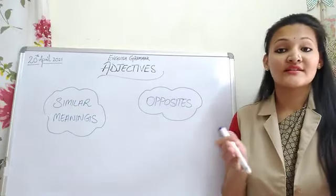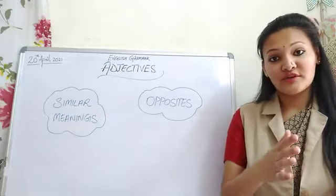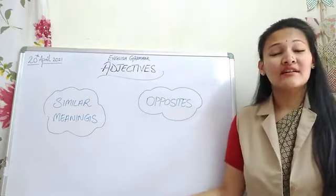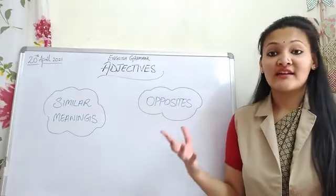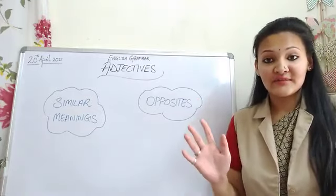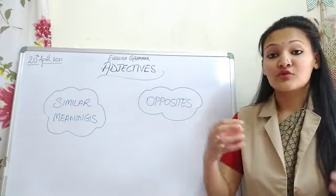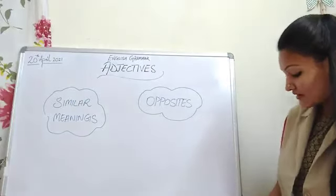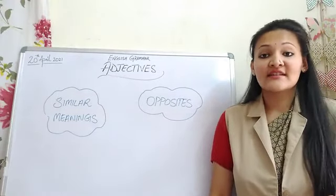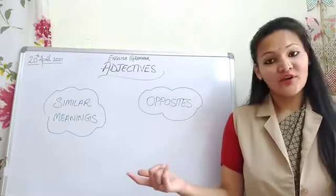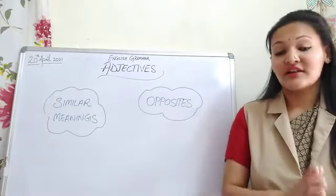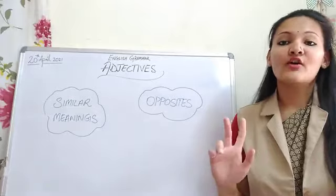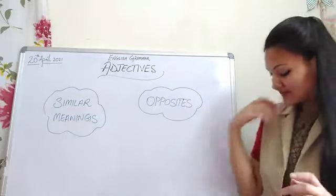Then there are opposites. If there are positive qualities, there are negative ones too. For example: high and low, dry and wet, clean and dirty, brave and coward, present and absent, long and short, light and heavy — all these are opposite adjectives.